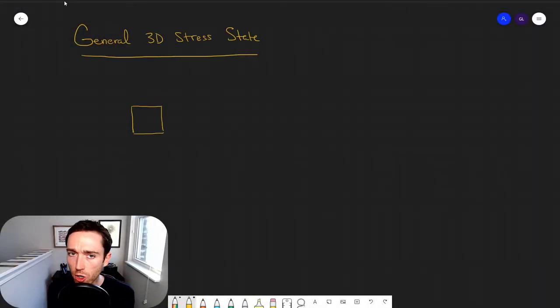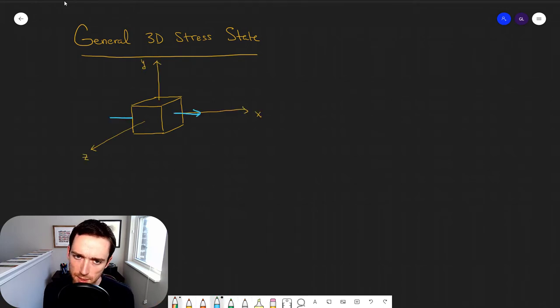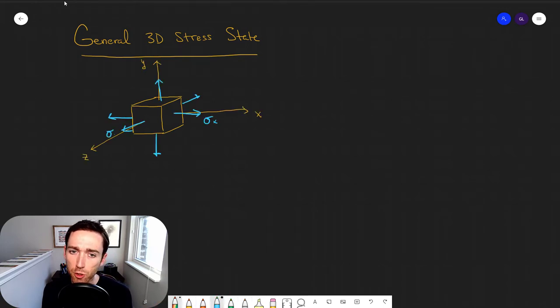So we first want to just go ahead and recall a general three-dimensional stress state. We worked our way up to this last time and now we want to picture normal stresses and shear stresses. Normal stresses would stay the same even if we converge down to a point from our volume, and we would see that those shear stresses were equal when we did that as well.